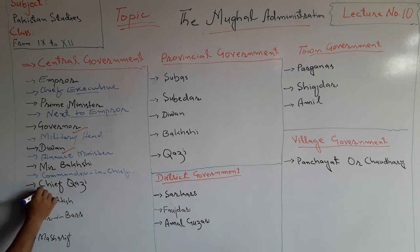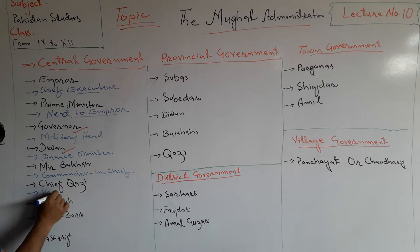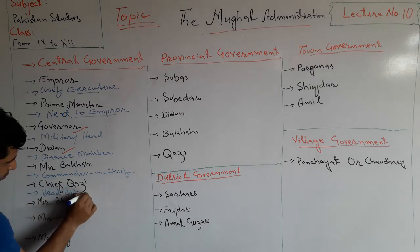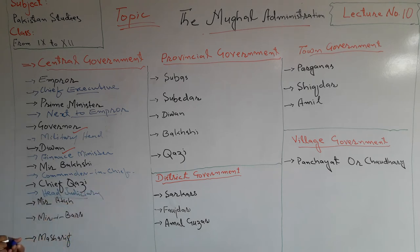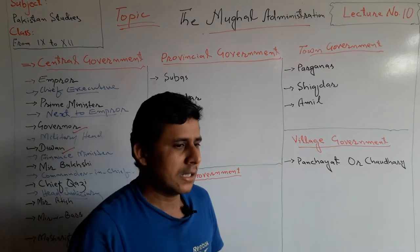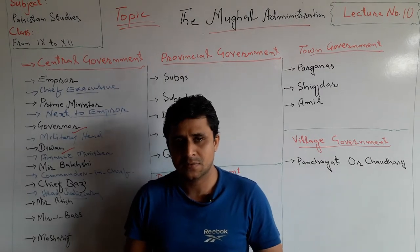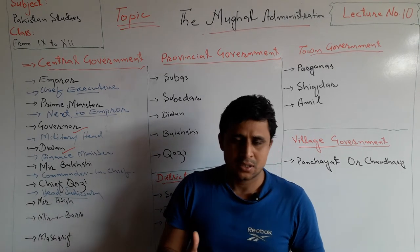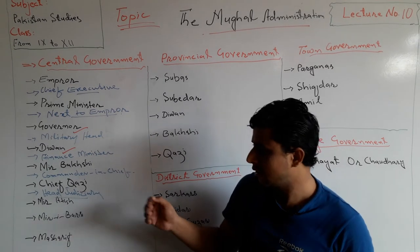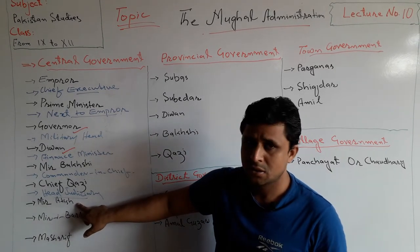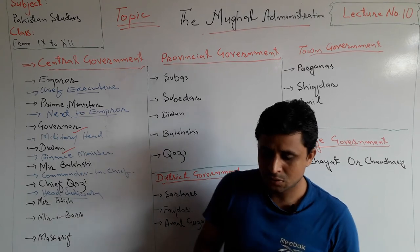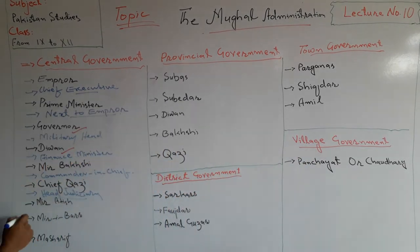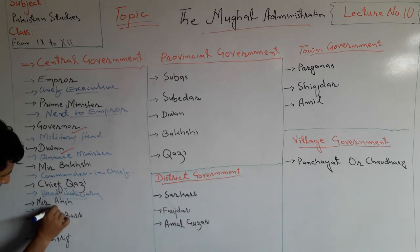Chief Kazi was the head of the judiciary system. Chief Kazi also took help and assistance from Muftis and Ulama to do justice to the people at the central level. Mir Atish was the head of artillery, which is a part of the military force.